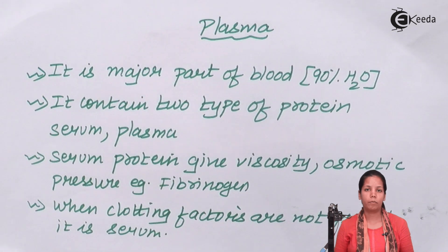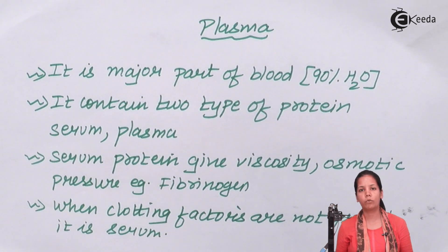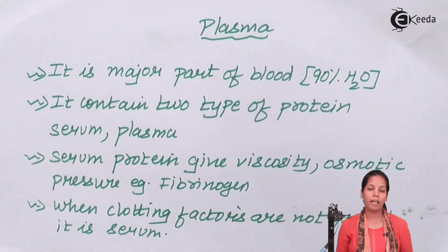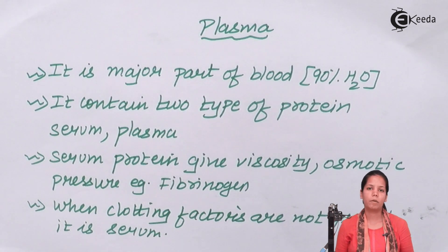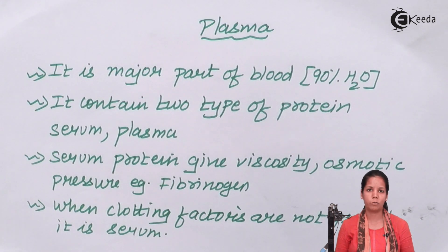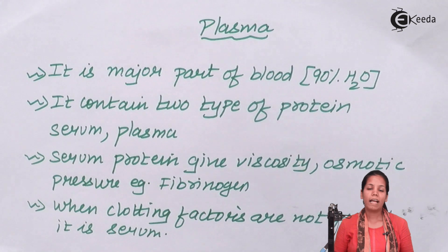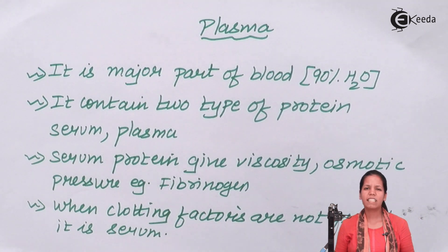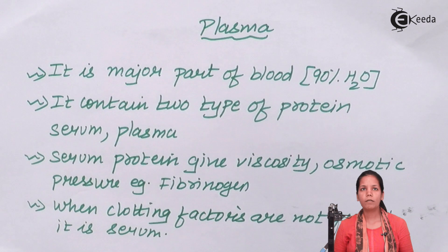These plasma proteins can be of two different types: one is serum proteins and another is plasma proteins. Serum proteins are much talked about, whereas plasma proteins are least talked about.